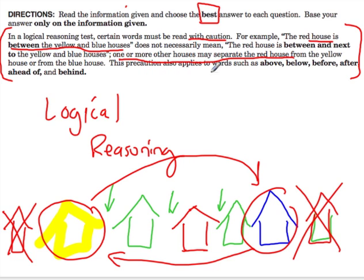And the precaution also applies to words such as above, below, before, after, ahead of, and behind. And you'll see some examples in this video series where they really focus in on the trickiness of this language. They must specify exactly where things are.